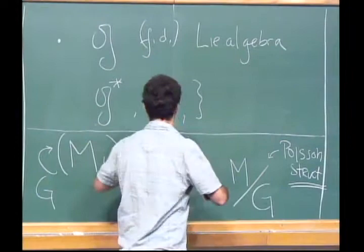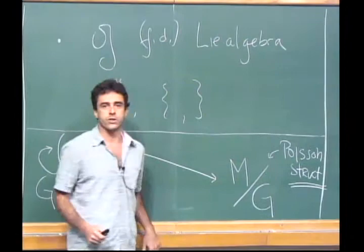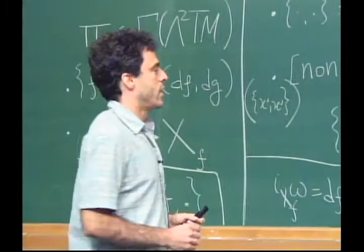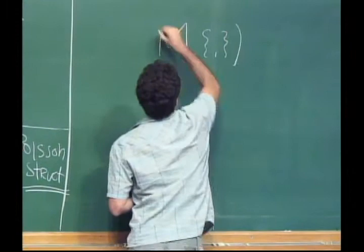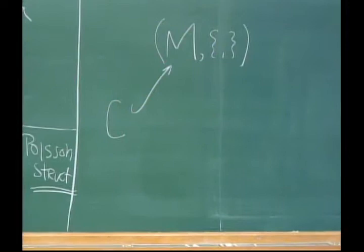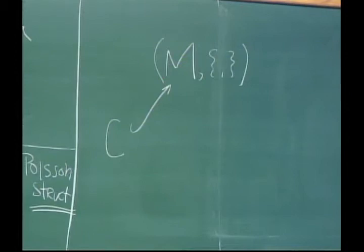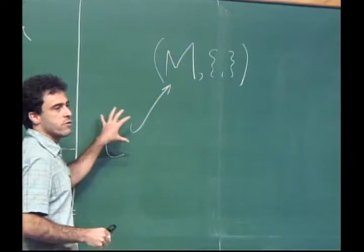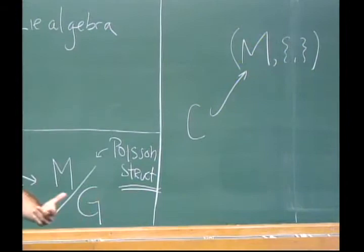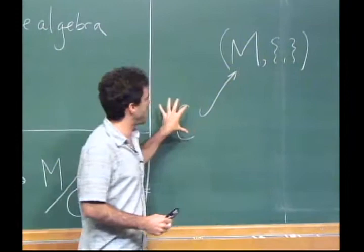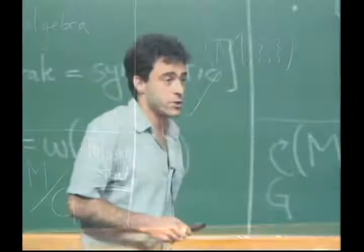Going from symplectic to Poisson structures can be viewed as closing the symplectic category under quotients. But there is another operation in mechanics — passing to submanifolds. A submanifold of a symplectic manifold is not symplectic in general, and there is a whole theory due to Dirac related to constraints. If you want to go beyond symplectic geometry in this direction, you have to go beyond Poisson geometry too, since these submanifolds won't inherit a Poisson bracket in general. This is one motivation to study Dirac structures.